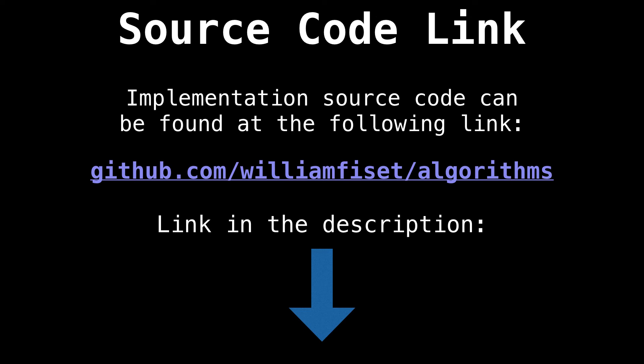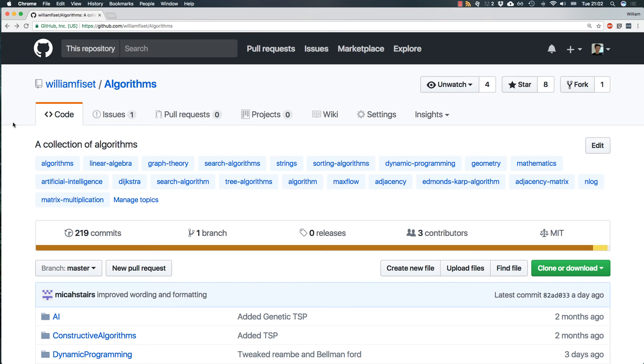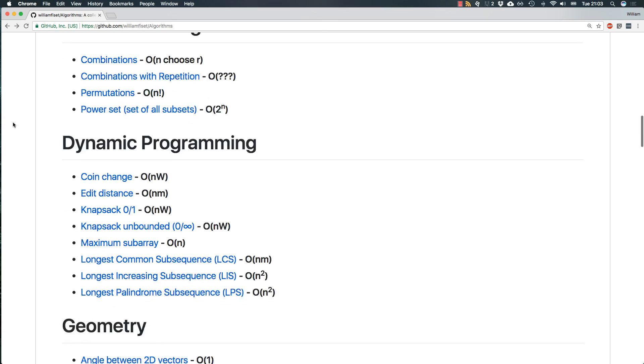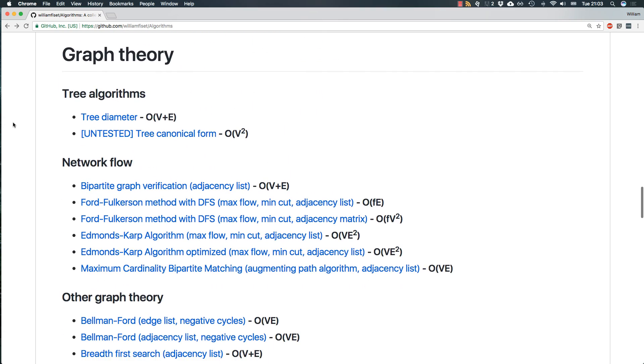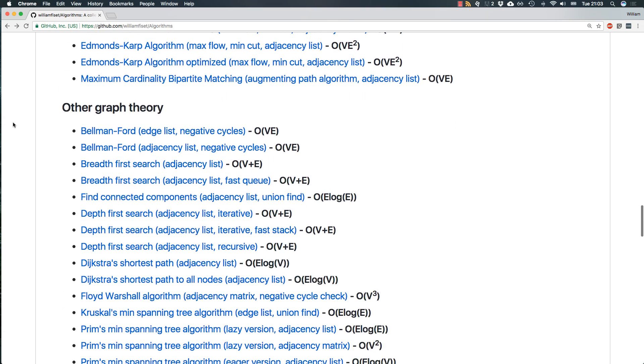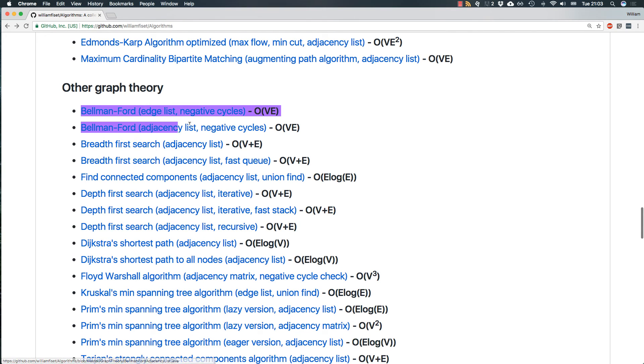All right, now I want to have a look at some source code. You can find a link in the description below or you can go to GitHub.com/WilliamFiset/algorithms. Here we are on GitHub in my algorithms repository. Now if you scroll down and look for Bellman-Ford under the graph theory section, you can see that currently there are two different implementations: one for a graph represented as an edge list, another one for a graph represented as an adjacency list. Today, we'll have a look at the edge list implementation.